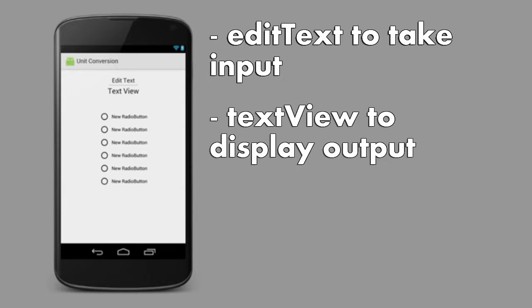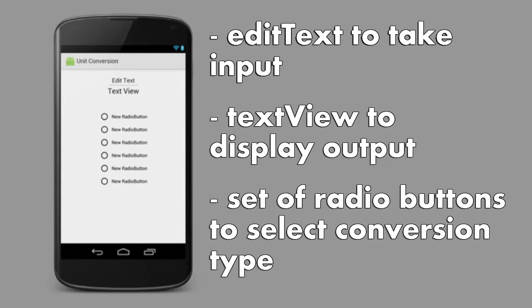Another thing we'll need is a set of radio buttons. Radio buttons are kind of like check boxes, but you can only select one of them from a group at a time. We'll use a set of six radio buttons to let the user select their conversion. For instance, if the user wants to convert 32 degrees Fahrenheit to Celsius, they will type 32 into the edit text and click the Fahrenheit to Celsius radio button.